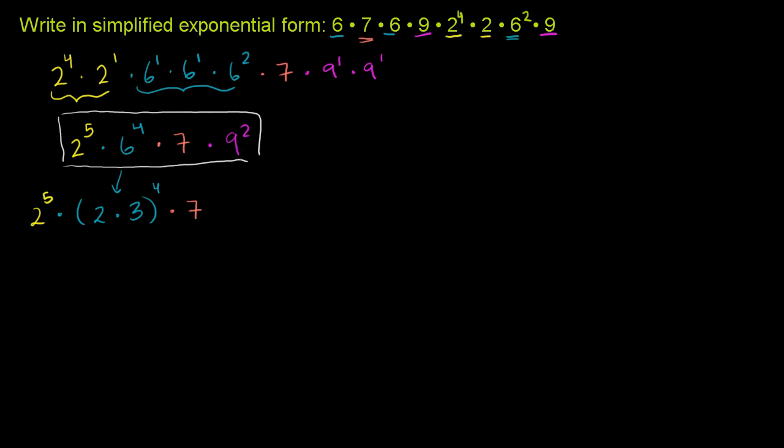Then we have the times 7. Then we have the 9 squared. But 9 we can rewrite. We can write 9 as 3 squared, and all of that squared. All I did here is I rewrote the 6 as 2 times 3, and I rewrote the 9 as 3 times 3, or as 3 squared. Now, I want to keep the color codes the same way.